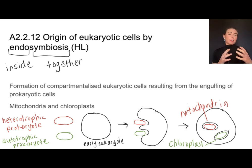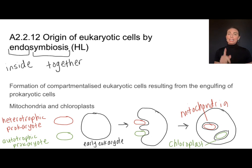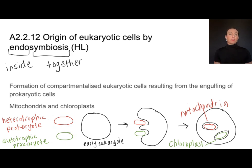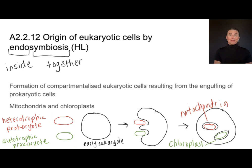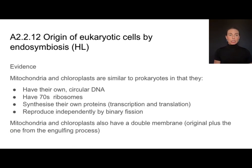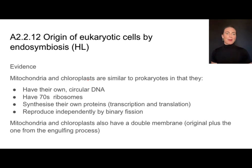What we really want to think about is what is the evidence that this is the mechanism by which this happened? Before we touch on that evidence, pay careful attention to the fact that the mitochondria and the chloroplast were once prokaryotes. We want to be looking for similarities between the mitochondria and chloroplast and the prokaryotes they evolved from. Mitochondria and chloroplasts both have their own circular DNA, just like prokaryotes.